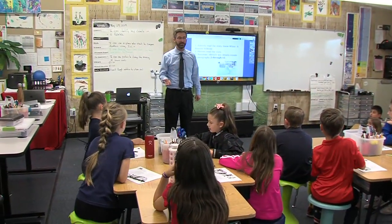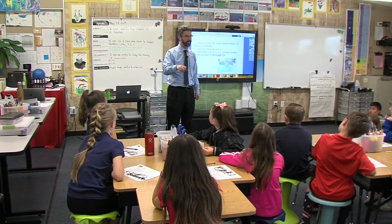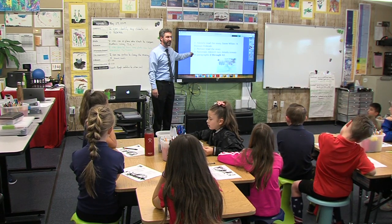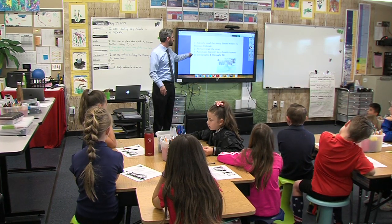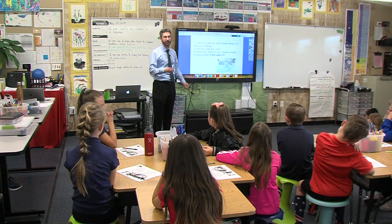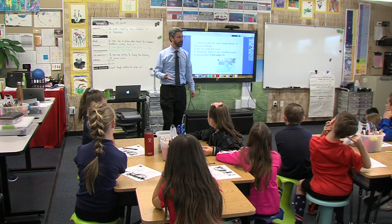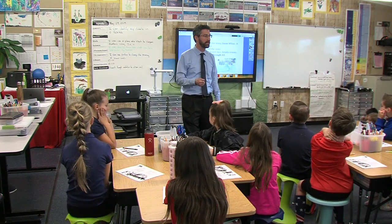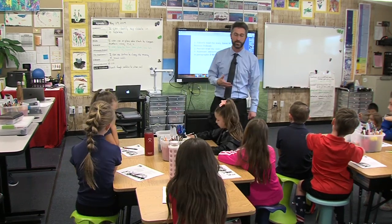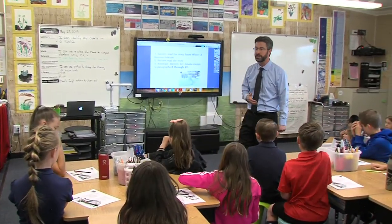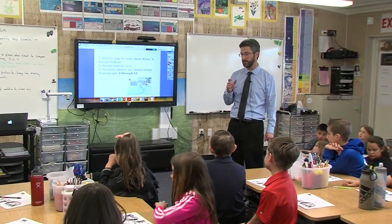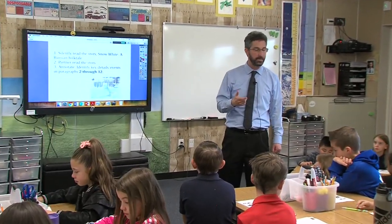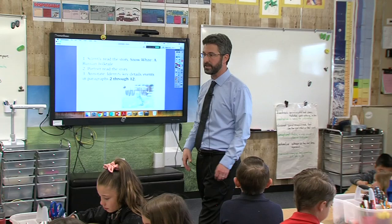Here's what you're going to do: you're going to finish reading the entire story silently. Then I want you to partner read it, just like we have done in the past. And when you've done those two things, you're going to grab your pencil and annotate, looking for those key details that help us understand more about that rising action — that problem of two characters who are lonely. Silently read it all the way through, partner read, and then we're going to annotate.